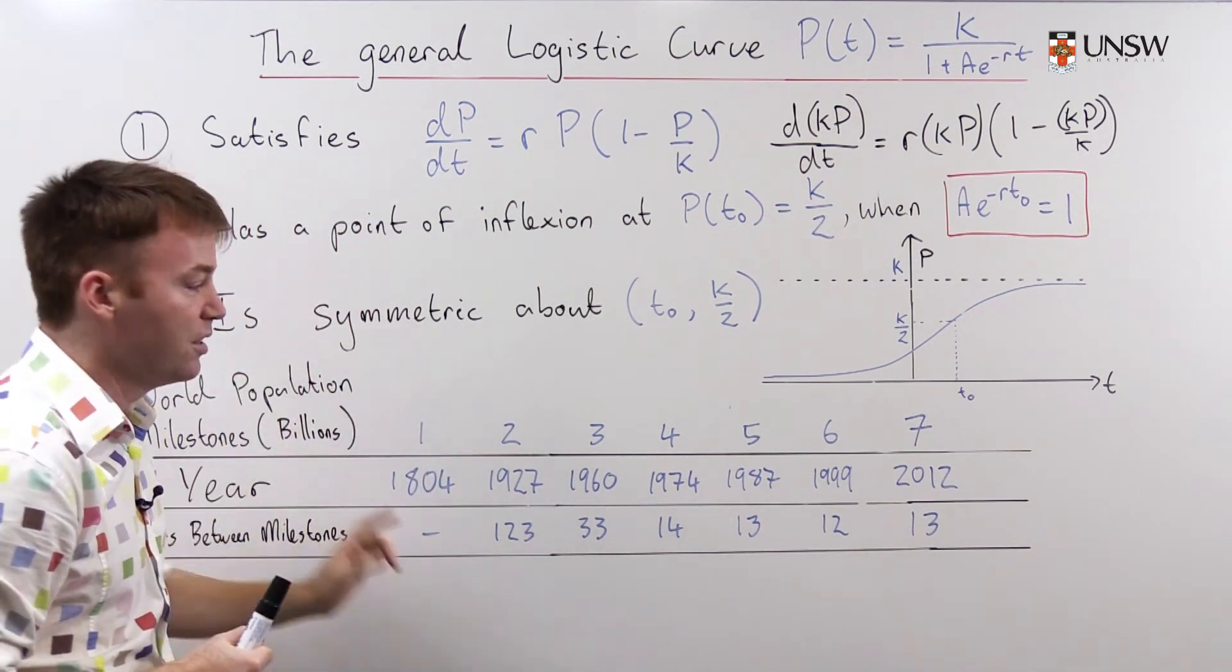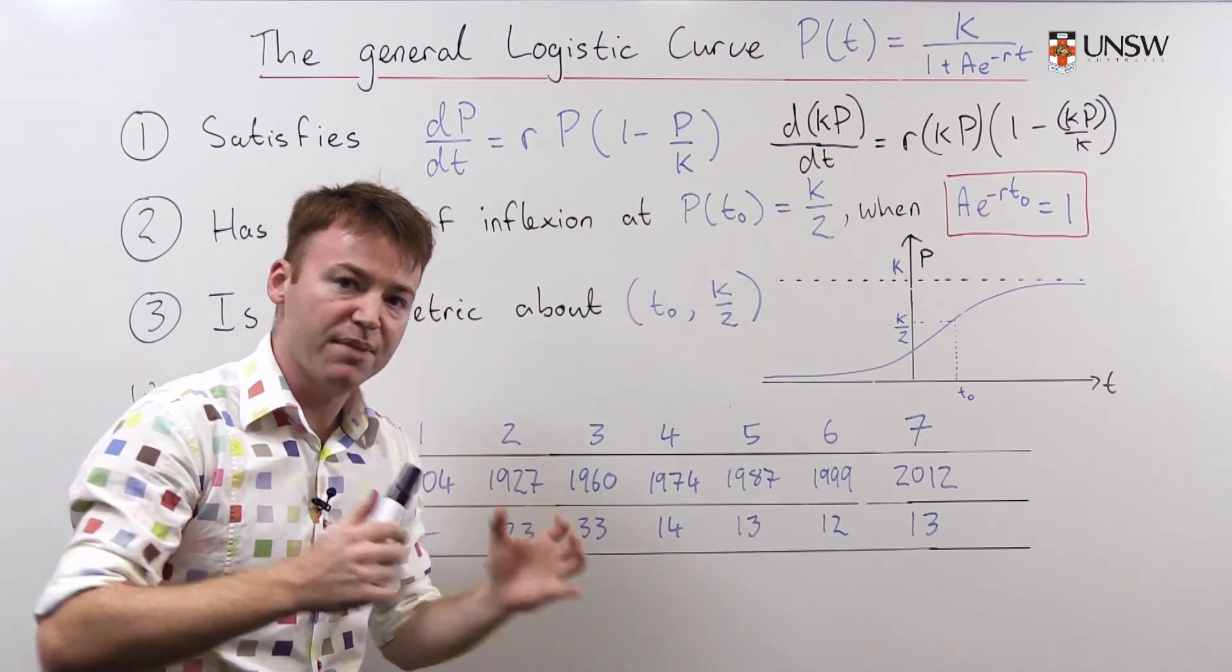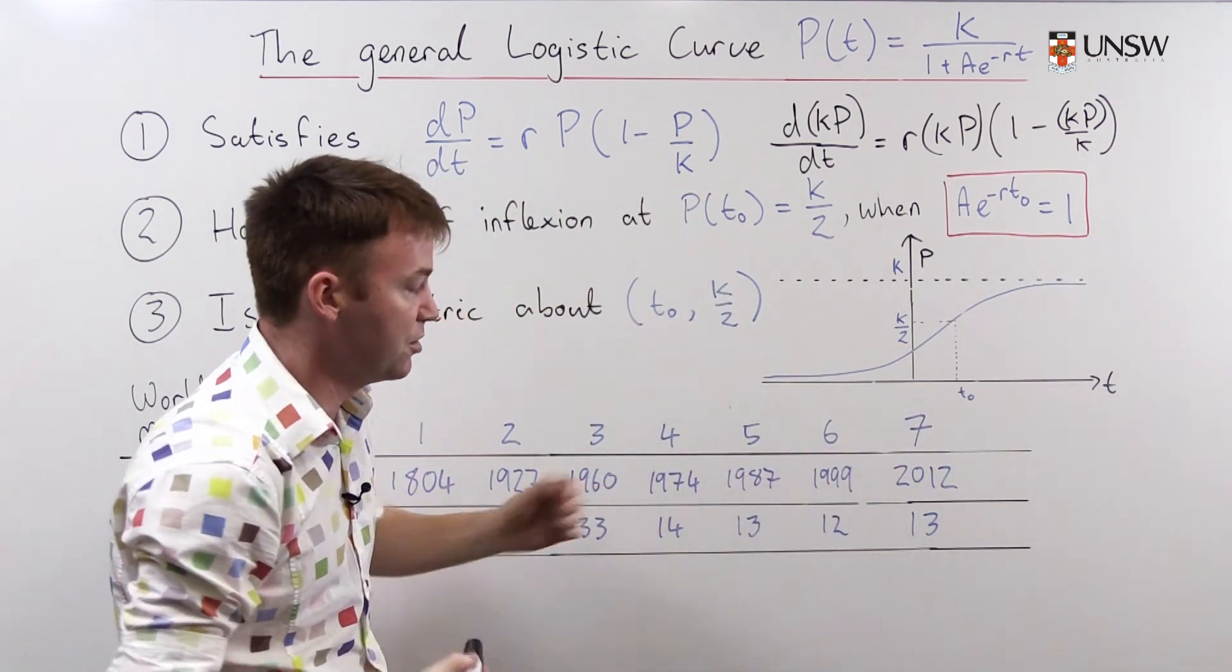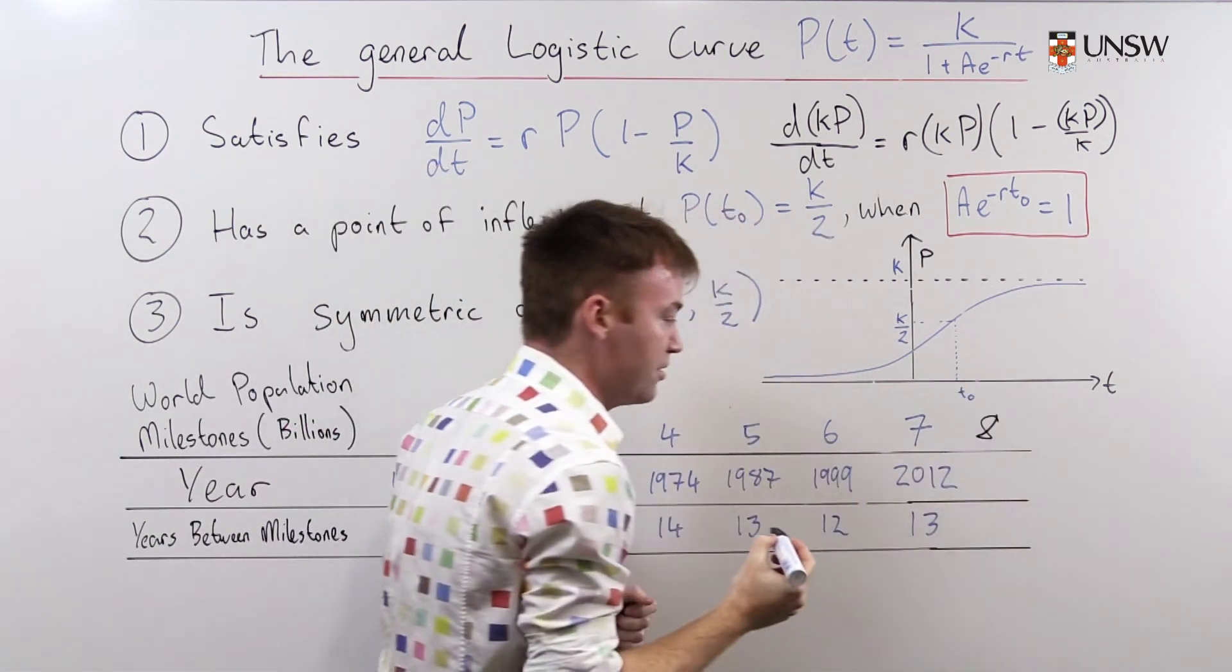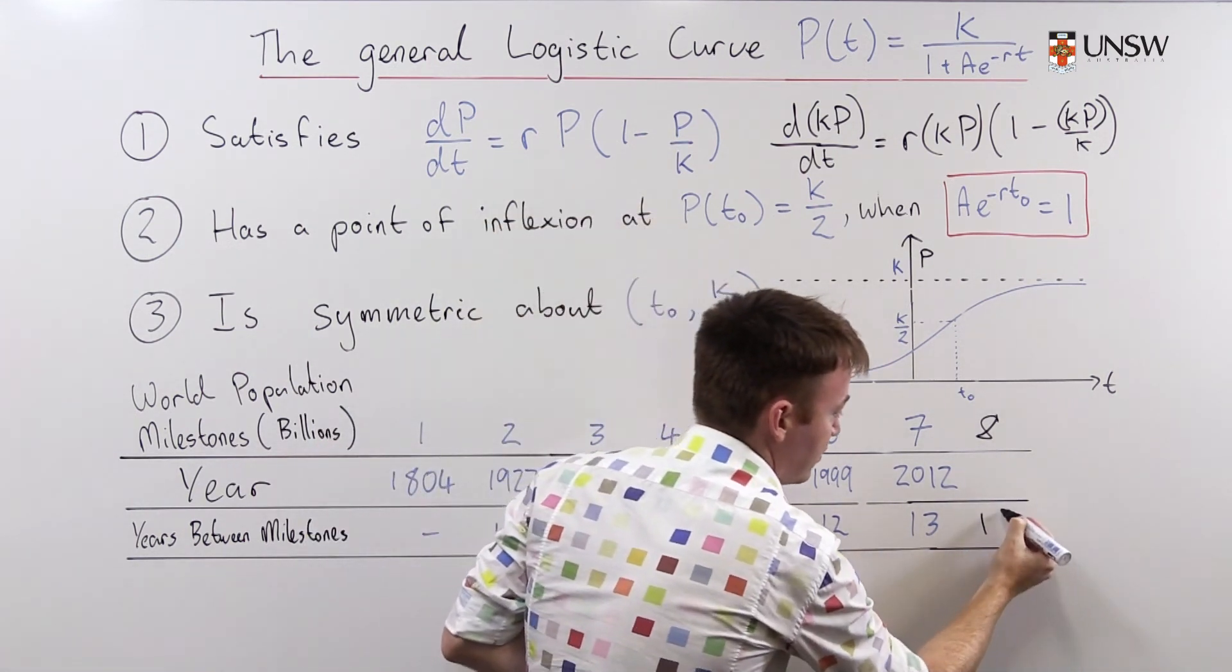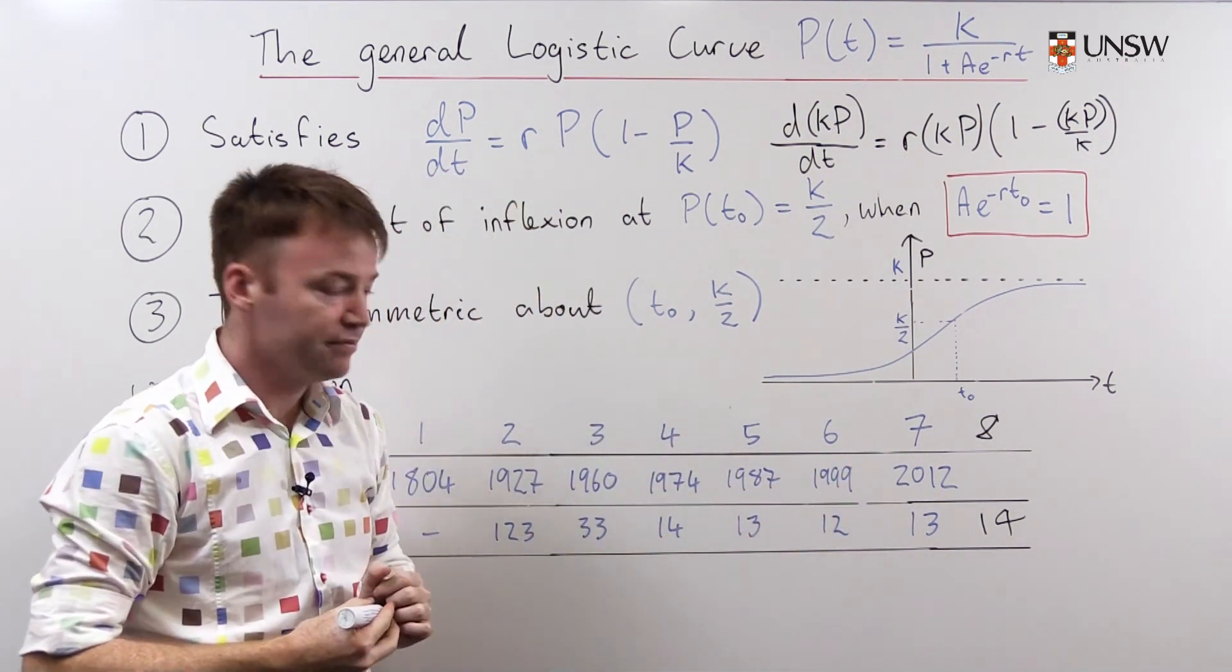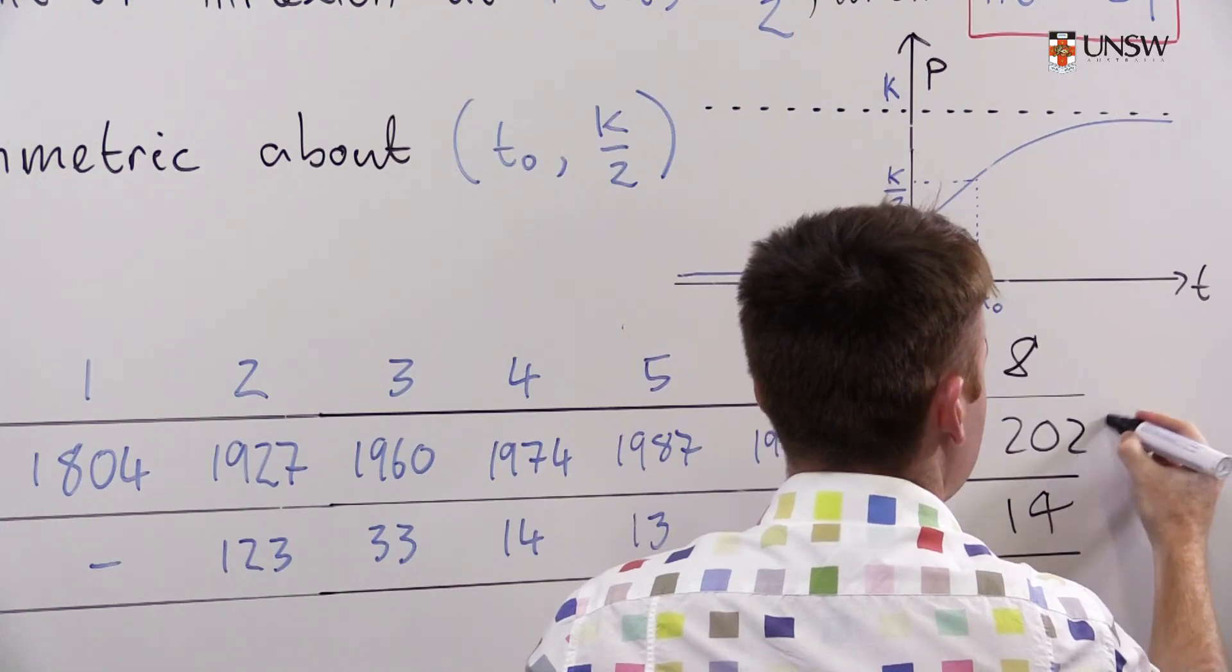Symmetry tells us even more. If we know that this is the point of inflection, then it's symmetric about this point. And so we can predict, based on the past, what the future population of the world will be. So if we want to know when will we achieve the eighth billion person, well, it's going to occur 14 years after the seventh billion person by the symmetry, which means that the eighth billion person will be born in 2026.